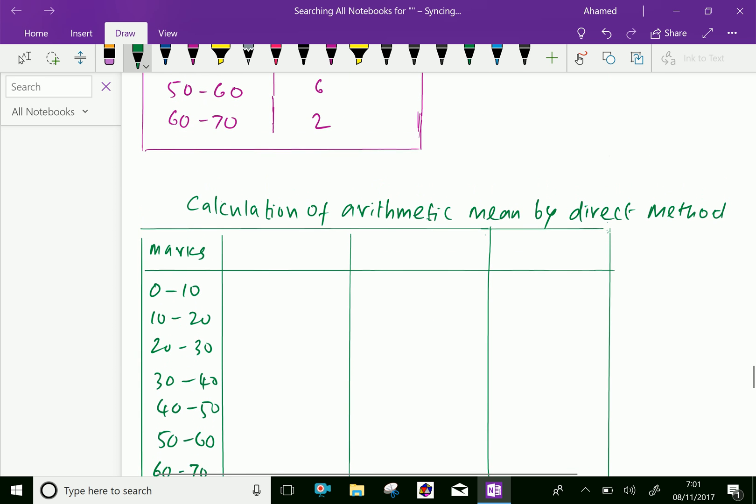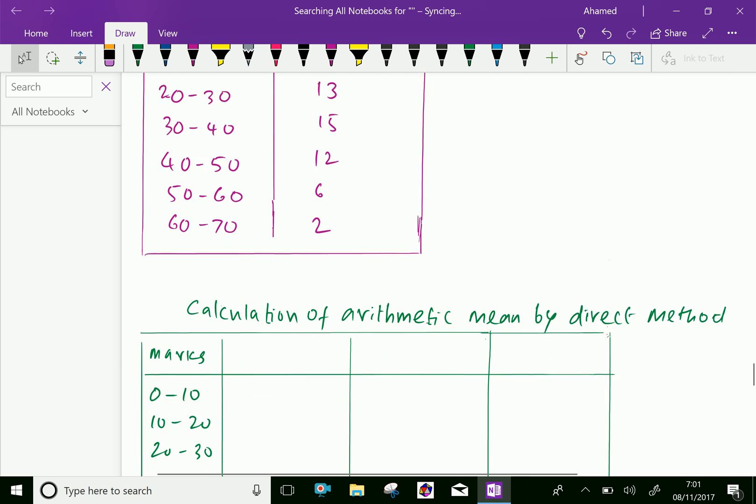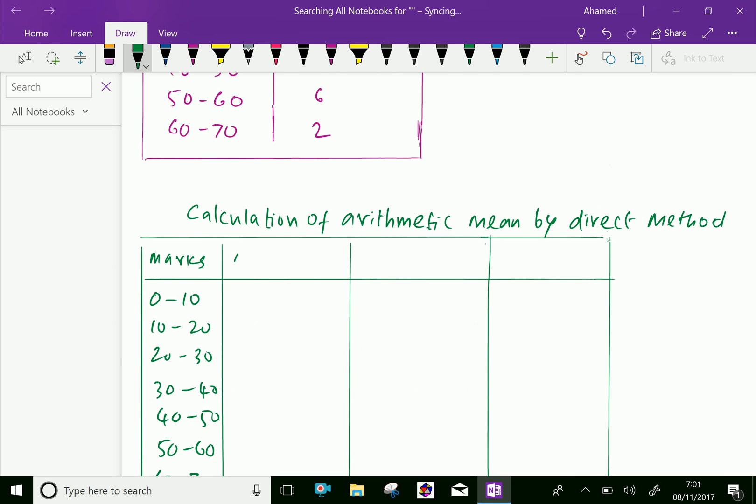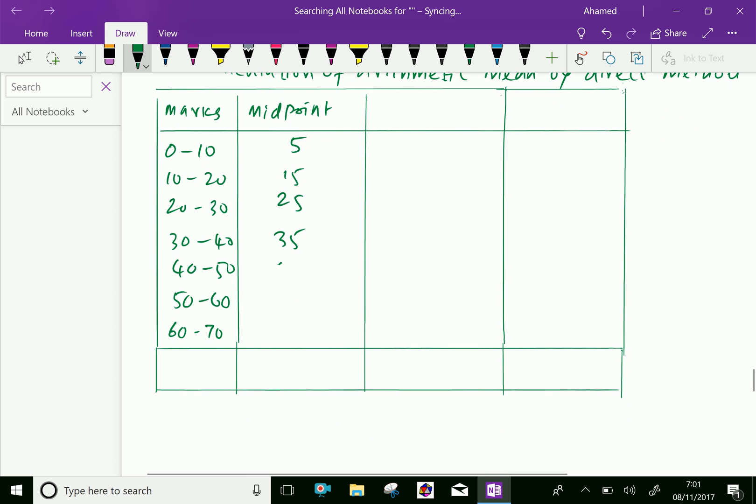Now, here the frequency, that is number of students. First find the midpoint. Midpoint of 0 to 10 is 5, midpoint of 10 to 20 is 15, like that 25, 35, 45, 55, and 65.